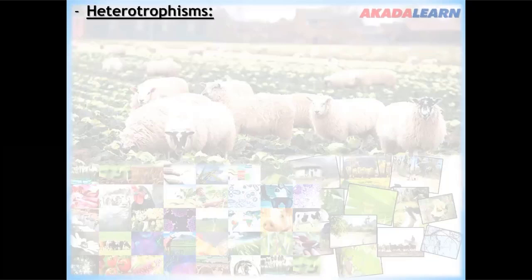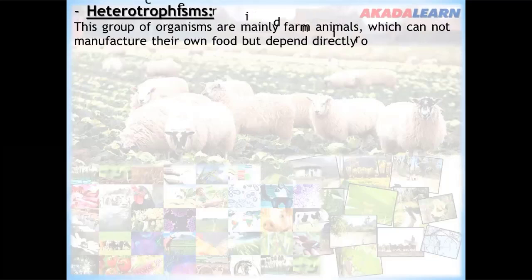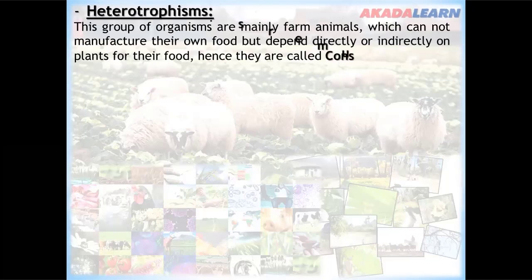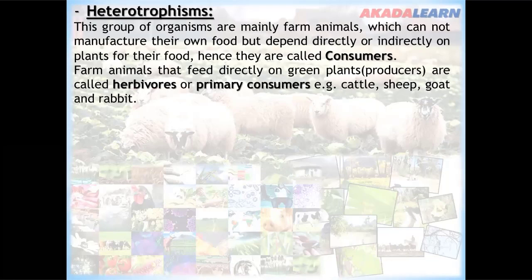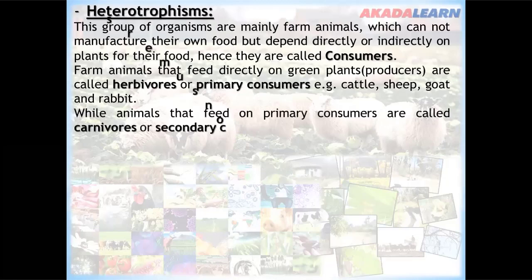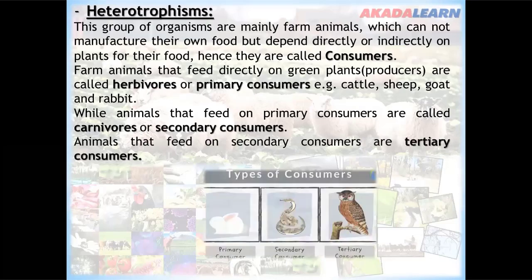Heterotrophs are mainly farm animals which cannot manufacture their own food but depend directly or indirectly on plants for food — hence they are called consumers. Farm animals that feed directly on green plants are called herbivores or primary consumers, for example cattle, sheep, goats, and rabbits. Animals that feed on primary consumers are called carnivores or secondary consumers, and animals that feed on secondary consumers are called tertiary consumers.